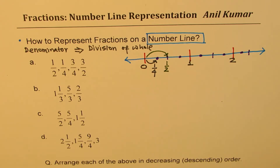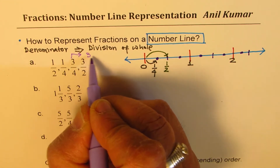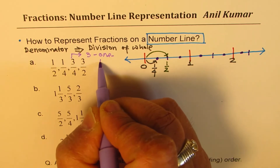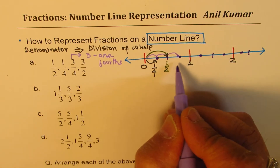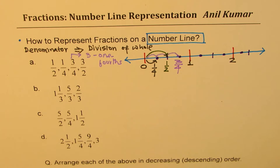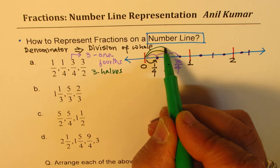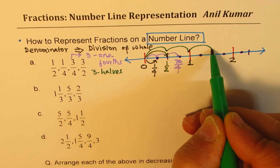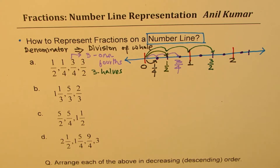Now let us see how to get the other numbers. Three-fourths means three one-fourths: one one-fourth, two one-fourths, and three one-fourths. So that number is three out of four. The last number is three over two. Three over two is three halves — so we have one half, two halves, and then three halves. That is how we should be placing numbers.